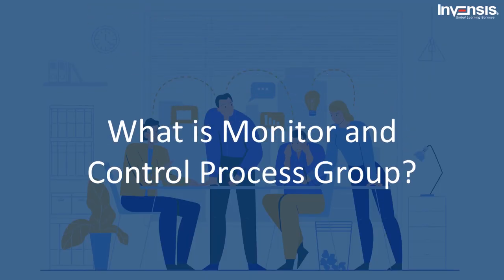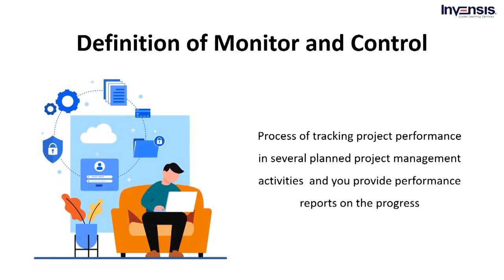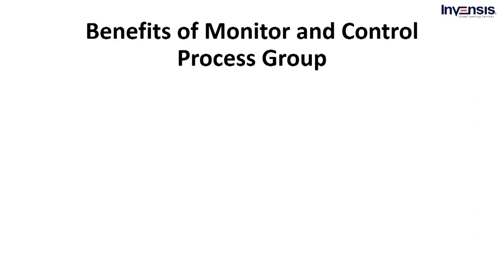Let's start with understanding the basics of the monitor and control group process. It is the process of tracking actual project performance in several planned project management activities and providing performance reports on the progress. The monitoring and control process is a control function that takes place in all phases from the start to the completion of a project. Throughout the entire process, the project manager's duty is to balance the several requirements that arise from various knowledge areas.